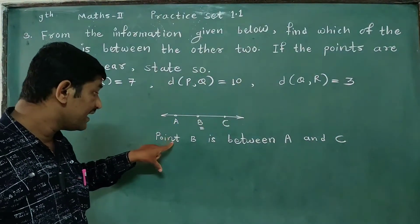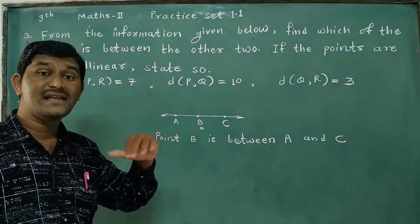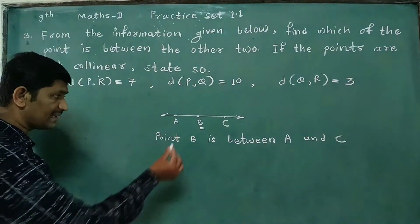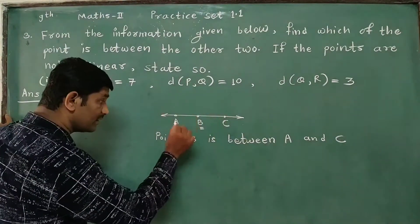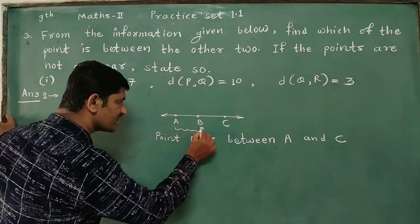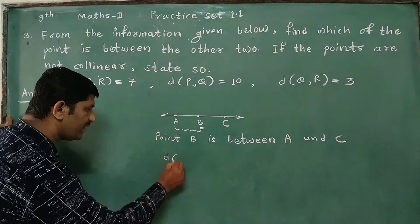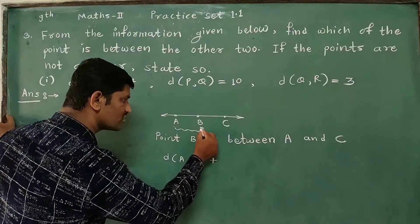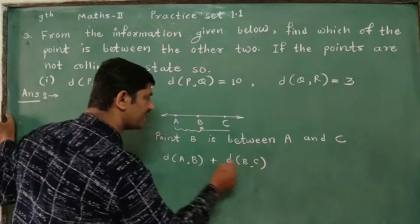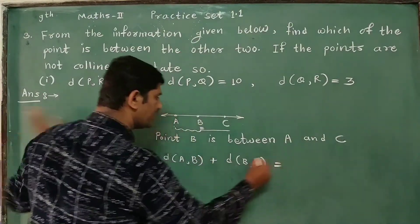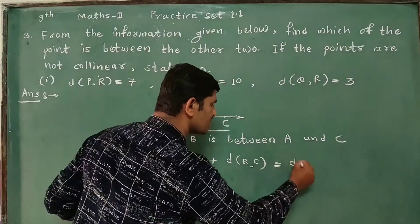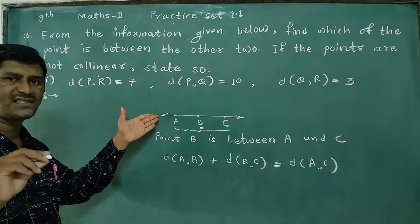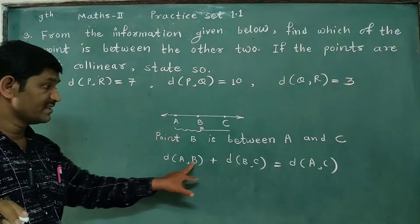Let's look at the sentence and the diagram. This is the distance equation. For points A, B, C: we find the distance between A and B, the distance between B and C, and the distance between A and C. The answer exists as that equation.